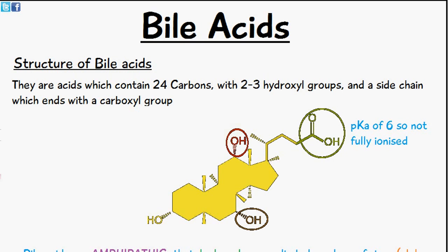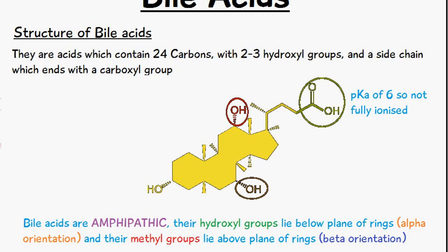What we can see here in this image below is the basic structure of a bile acid. They are acids which contain about 24 carbons with two to three hydroxyl groups and a side chain which ends with a carboxyl group.